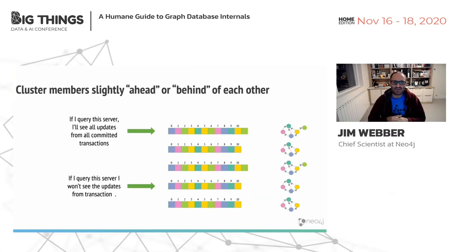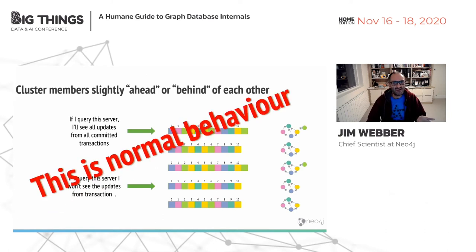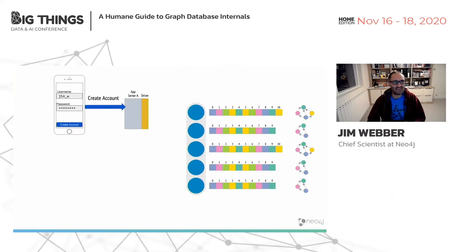One funny thing about Raft — even though it's a protocol for strong consistency — is that because of physics, cluster members are always slightly ahead or behind each other. So this is technically, from a God's-eye point of view, inconsistent, but it's also normal behaviour. We can actually take this into account. So if I've got that app we saw earlier and I do create account, my mobile device sends a message via REST to an app server which has a Neo4j driver, which sends a message to the database to create a user.